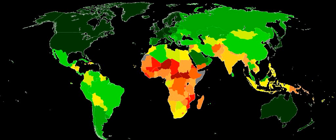Countries fall into four broad human development categories: very high human development, high human development, medium human development, and low human development. Because of the new methodology adopted since the 2010 Human Development Report, the new reported HDI figures appear lower than the HDI figures in previous reports.